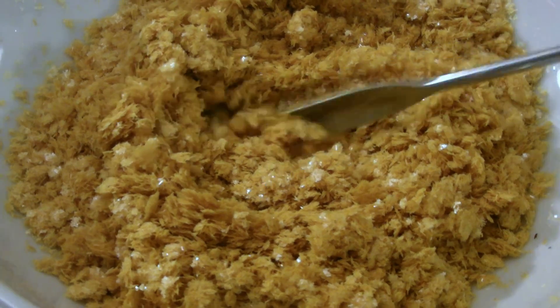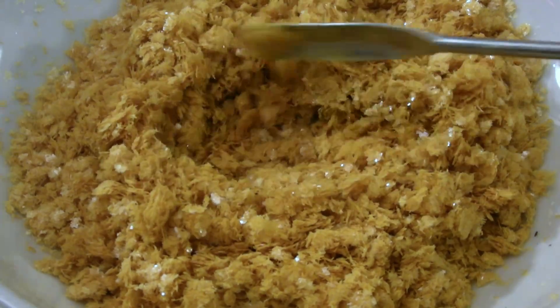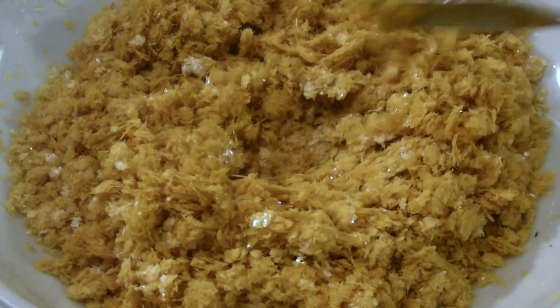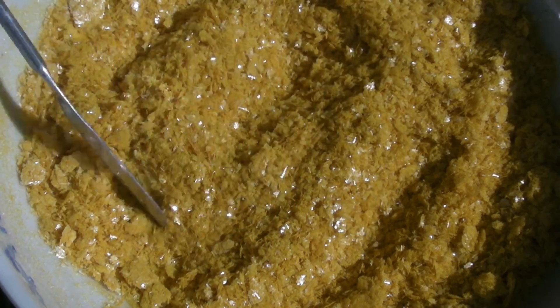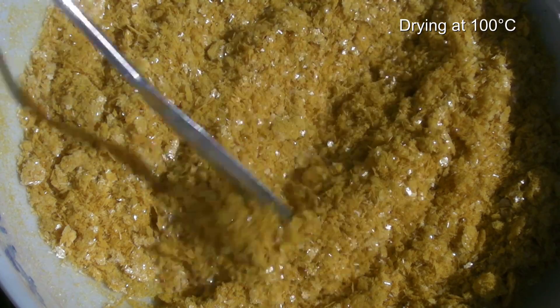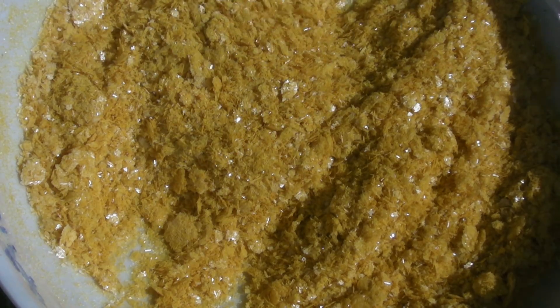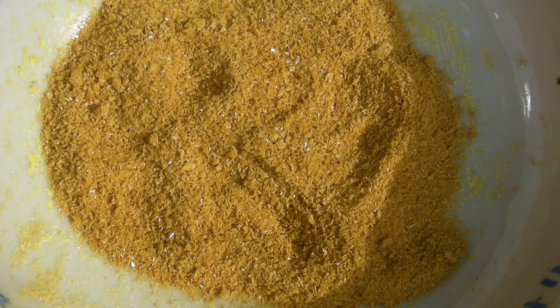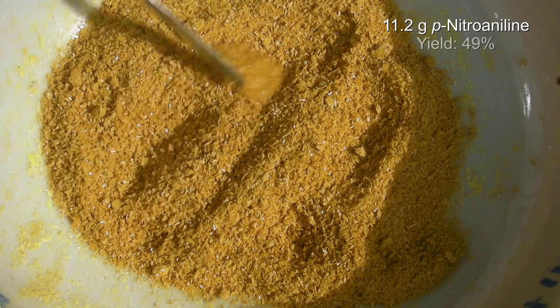The crystals were filtered off added to a large bowl and dried on air for two days. They seem to be dry but they still contain a lot of solvent which is removed by drying it at 100 degrees C. 11.2 grams of p-nitroaniline were obtained which is a yield of 49%.